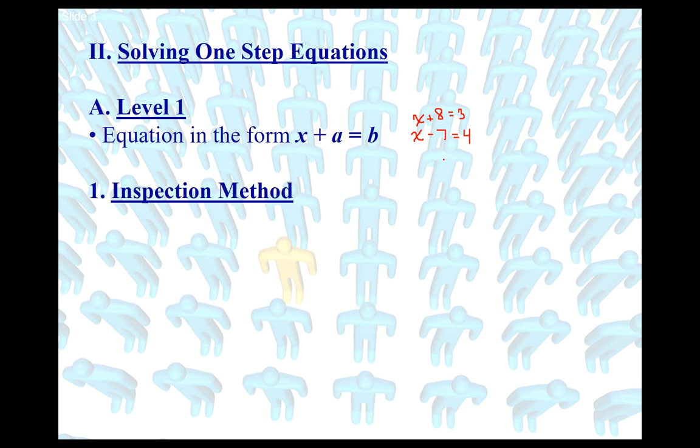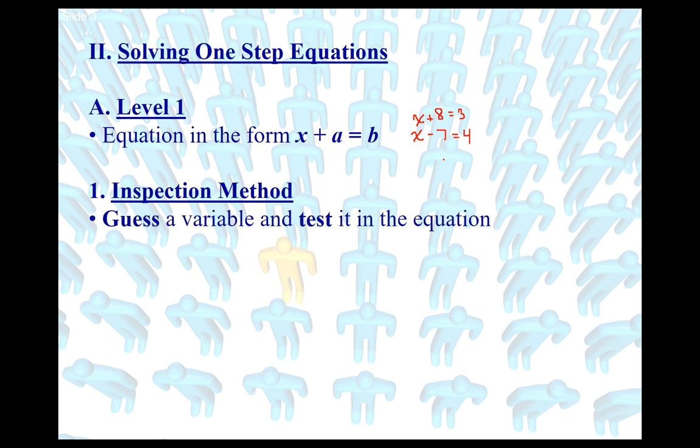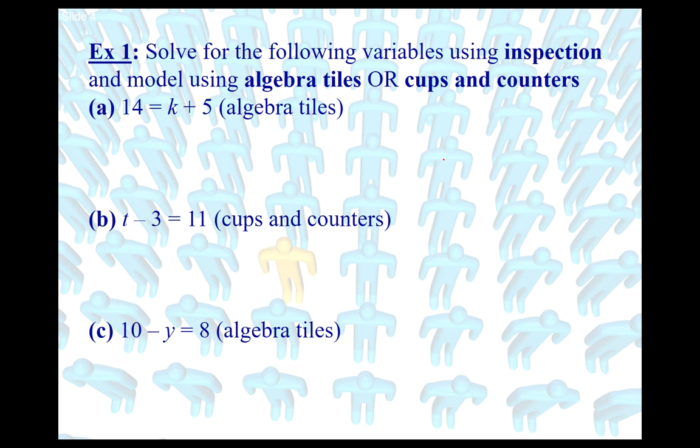There are a couple of methods we can use to do this. The first method we're going to use is referred to as the inspection method. For the inspection method, what we do is we essentially just guess what the value of the variable is, and just test it to make sure it actually works. Let me show you how to do this.